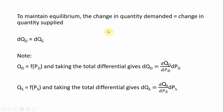To maintain equilibrium, the change in quantity demanded will need to equal the change in quantity supplied. Note that quantity demanded is just a function of price. If we take the total differential of the demand function, the change in quantity demanded equals the derivative of the demand function with respect to price multiplied by the change in price. We substitute this into our formula above. We can do a similar thing for the supply side — taking the total differential of the supply function — and substitute the right-hand side into the formula above as well.